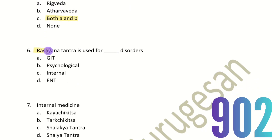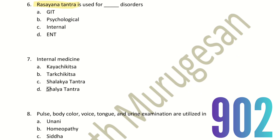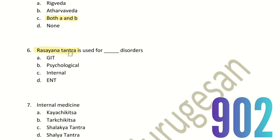Sixth question: Rasayana Tantra is used for which disorders? In pharmacognosy, there is a treatment called Rasayana Tantra. There are different types of treatments such as Shale Tantra, Shalakya Tantra, Tachikisha, and Kaya Chikisha. The choices are gastrointestinal tract disorders, psychological disorders, internal disorders, and ENT disorders. Rasayana Tantra is used for ENT disorders — that is the right answer.